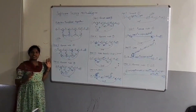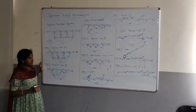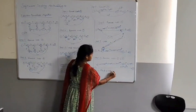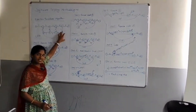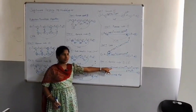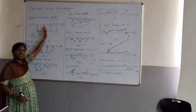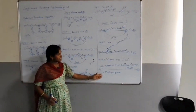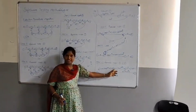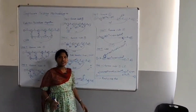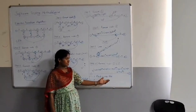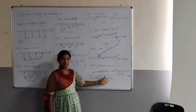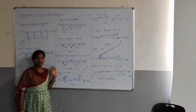The advantages of the reduction procedure algorithm: it reduces and saves time because while the initial flow graph has many paths, the final expression is just one expression. Instead of testing all those paths, testing only one expression is easier and takes less effort. It also improves efficiency and improves test coverage. These are the benefits of the reduction procedure algorithm. Thank you.